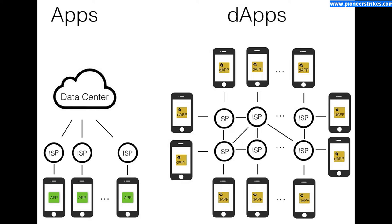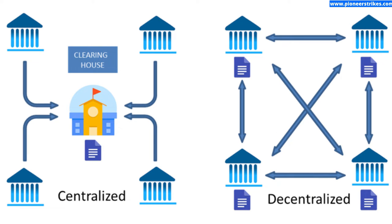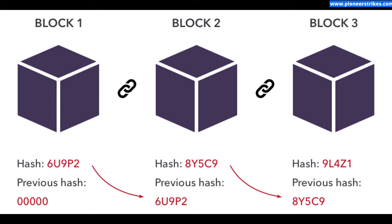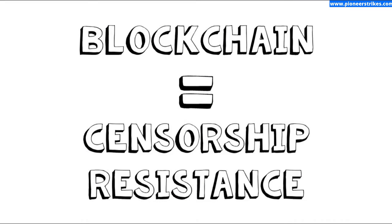DApp applications have no central point. If you have made a transaction or any action, there is no one who can stop that transaction — even if the government wants to stop it, regardless of how much power they have, it will go through. There is no data center, as the data is stored in the blockchain ledger, so the data is duplicated and secure. The transactions are secure because of data duplication, and it also protects against censorship, ensuring transactions will go through.